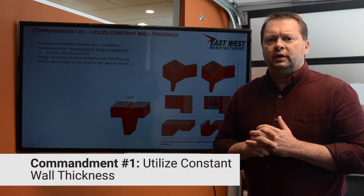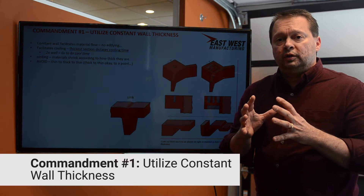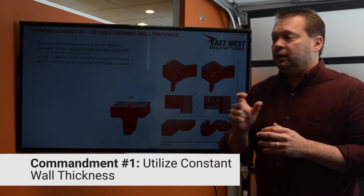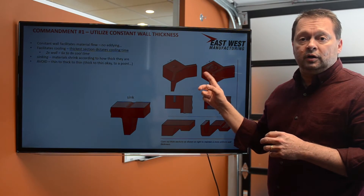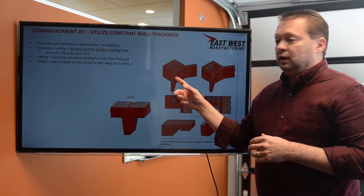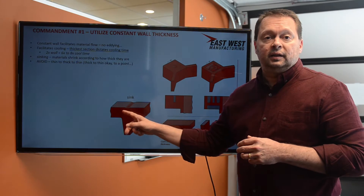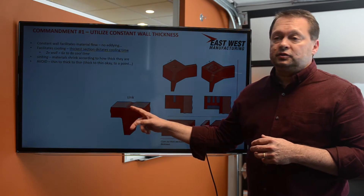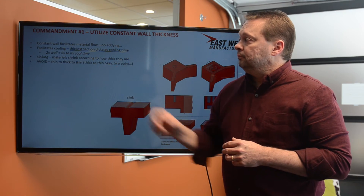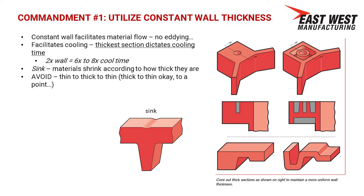The first commandment for injection molding is to utilize constant wall thickness. Injection molded parts will shrink according to how thick the part is in a certain area. A part designed well has a consistent wall, so it will shrink in a consistent, very predictable manner. Whereas a part with different thicknesses will shrink in different amounts in those directions and will cause unsightly sink and cosmetic errors. It's also important to maintain constant wall thickness to eliminate flow anomalies like eddying currents, which create other cosmetic defects.